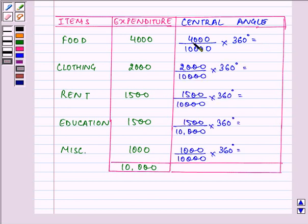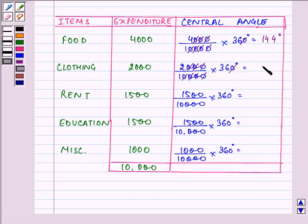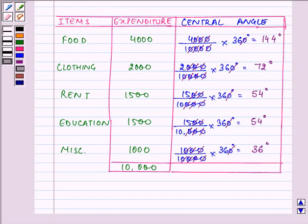After simplifying, we have the value as 36 into 4, which comes out to be 144 degrees. In the same manner, we have 36 into 2, which comes out to be 72 degrees. Then we have 15 into 36 upon 10, and the remaining items are computed respectively in the same manner. The sum of all these degrees should come out to be 360 degrees.